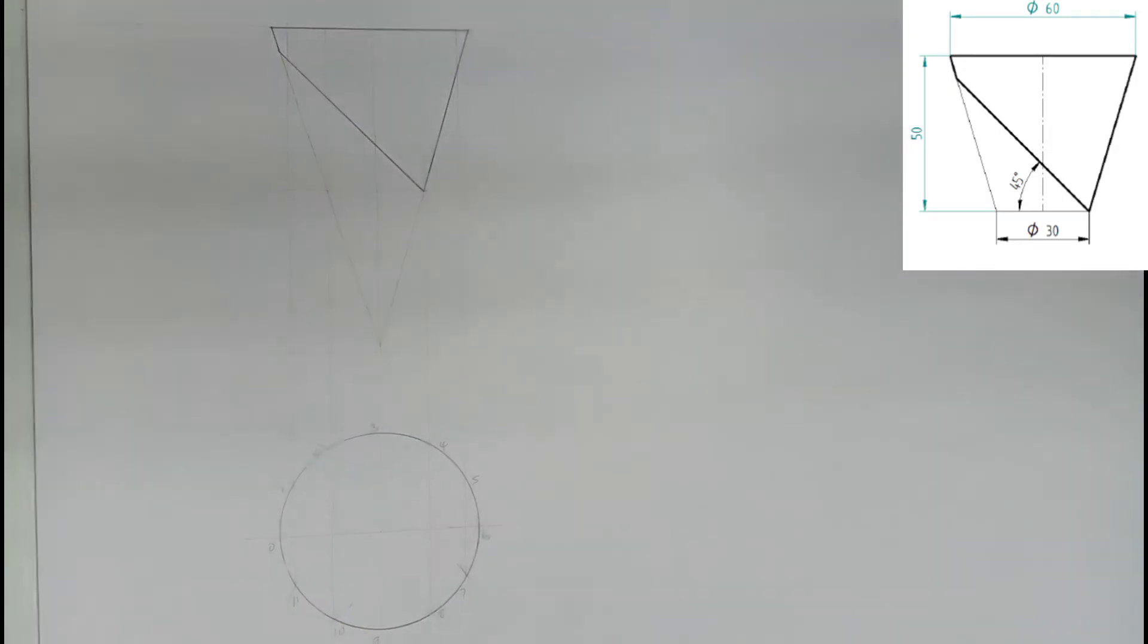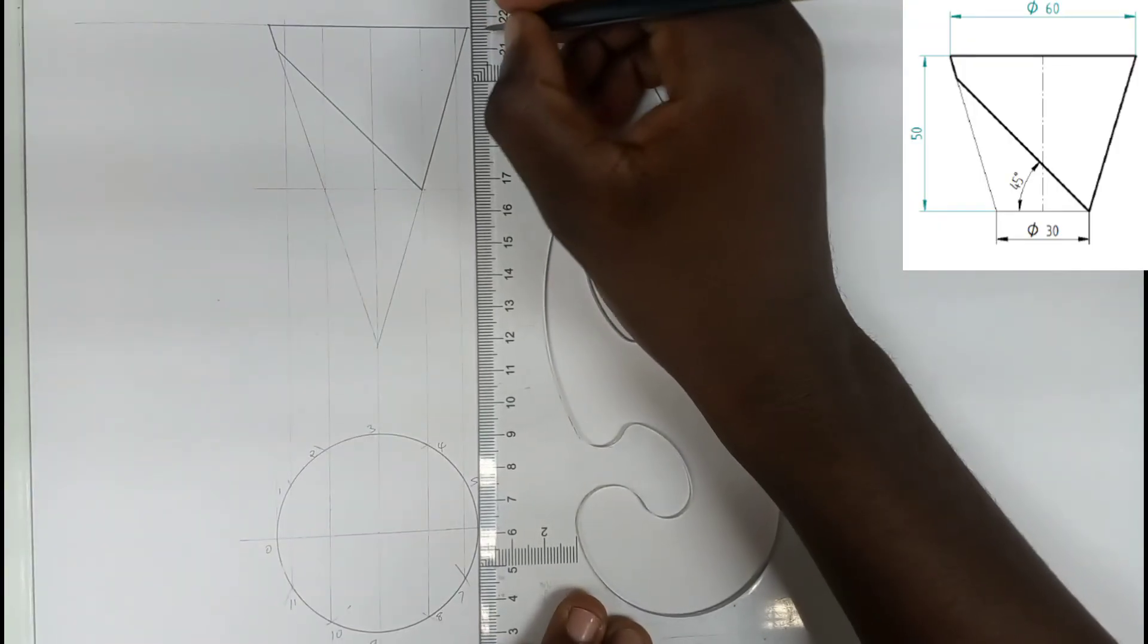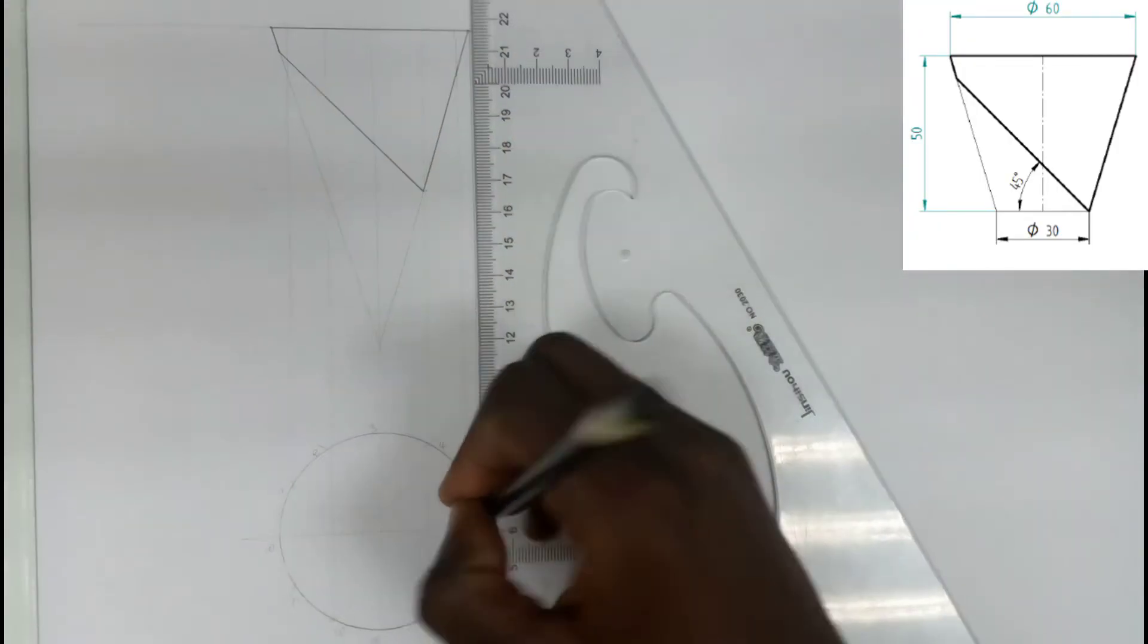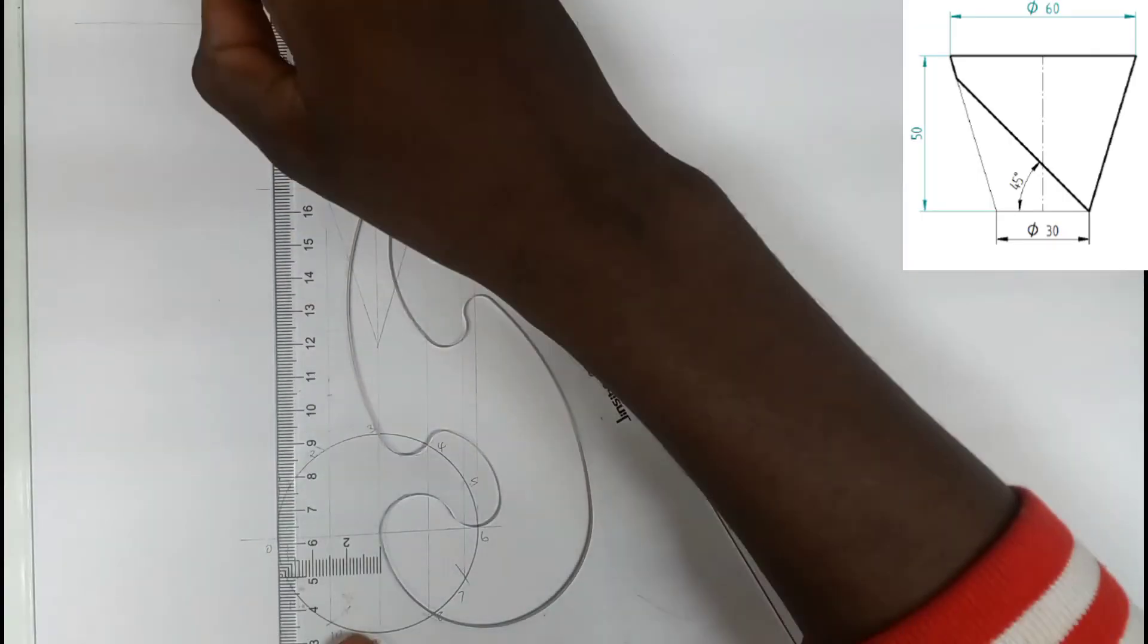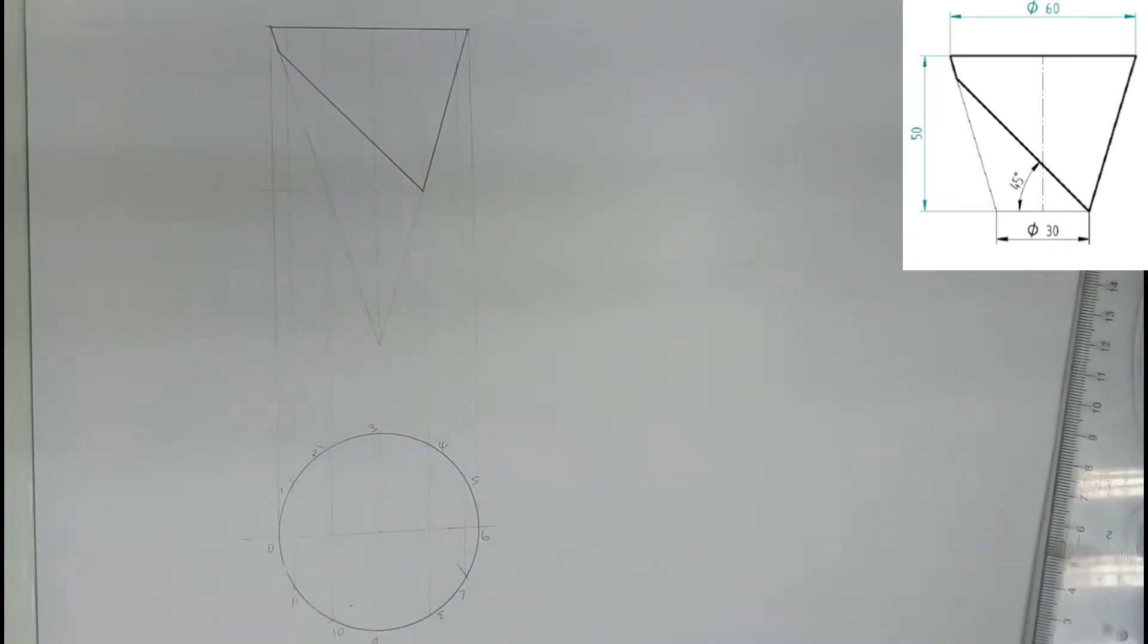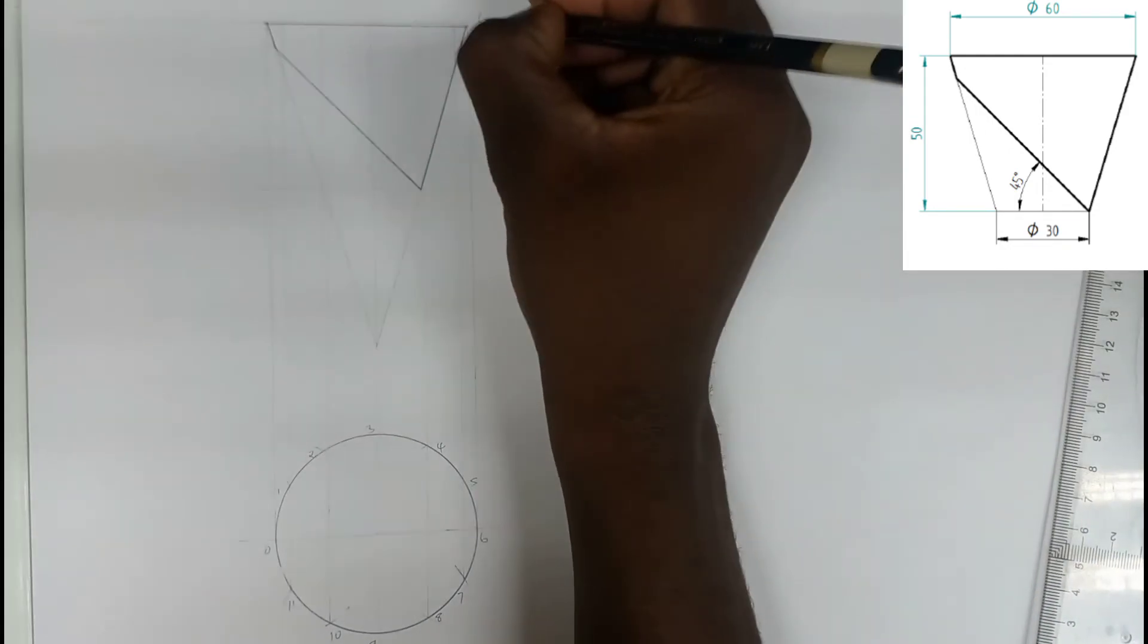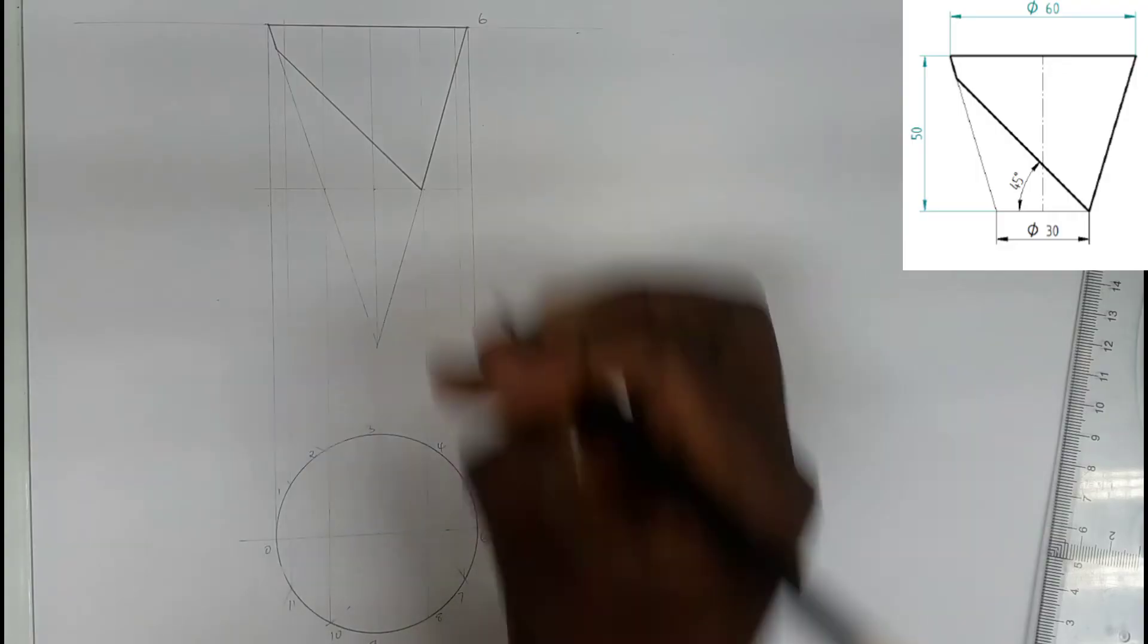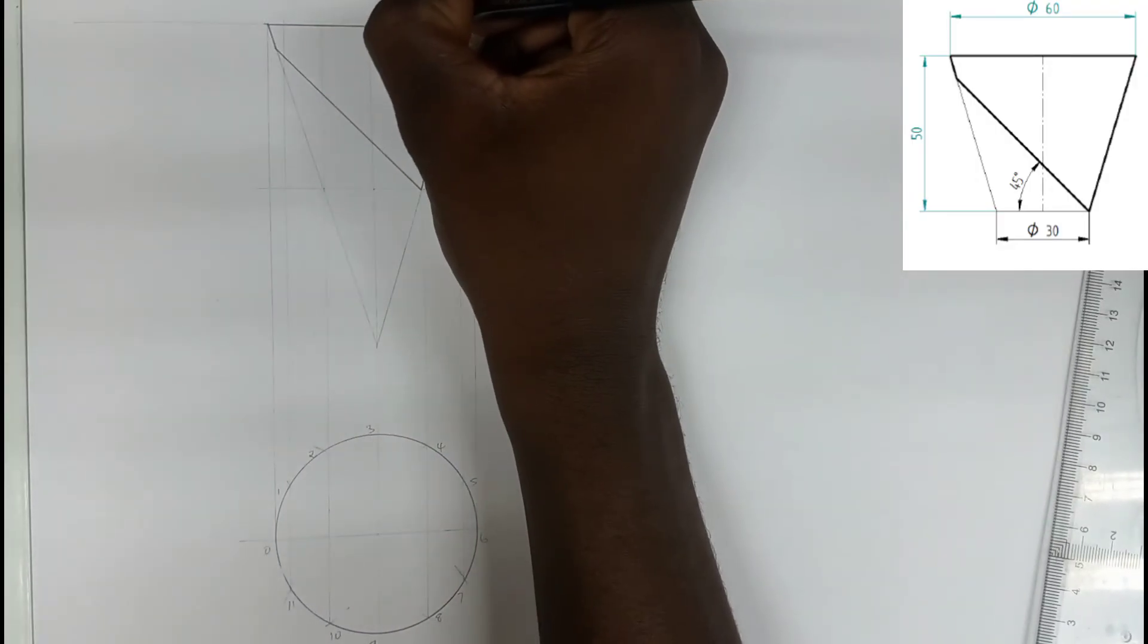Like this. In order to avoid confusion, I'm going to name my points. This is point 6, and this is 5, 7, 4, 8 on the opposite side.